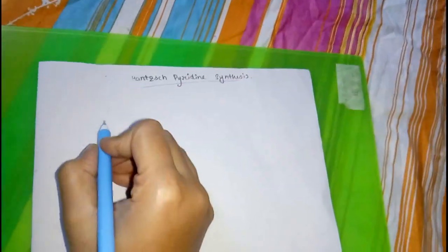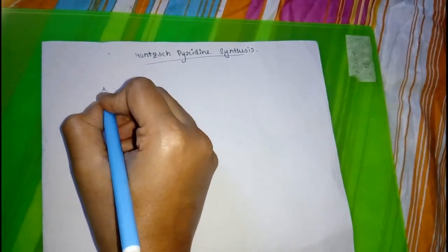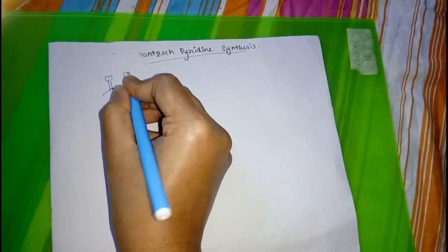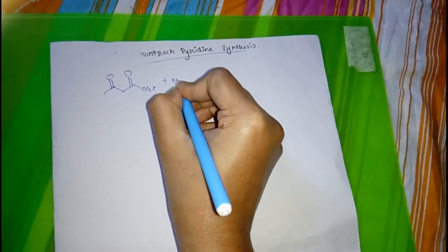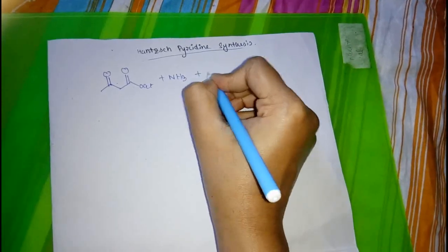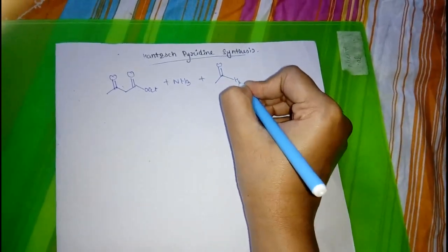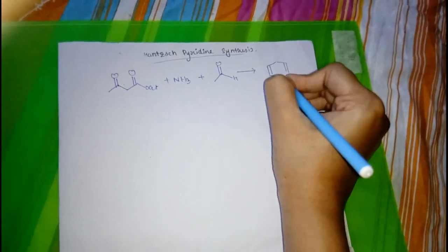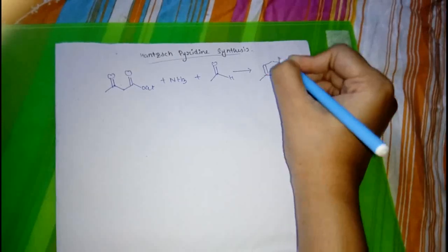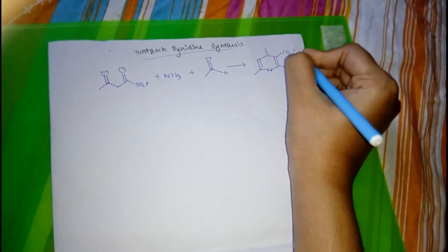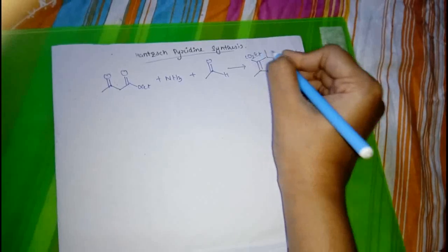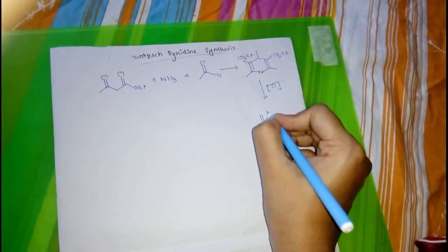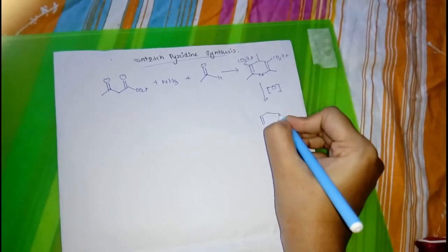Starting materials of Hanck's pyridine synthesis are ethyl acetoacetate, ammonia, and acetaldehyde. They give this pyridine derivative, and then by oxidation our required pyridine is formed.